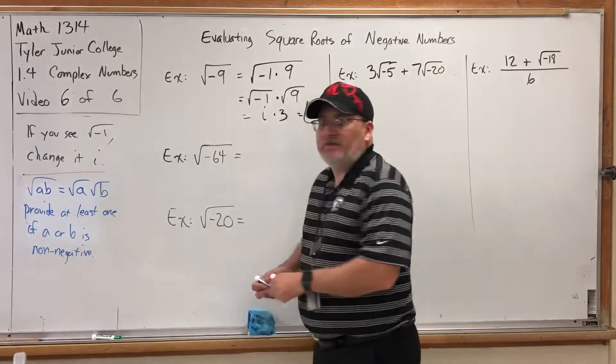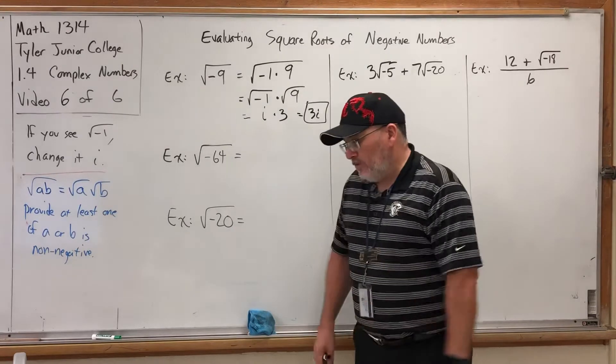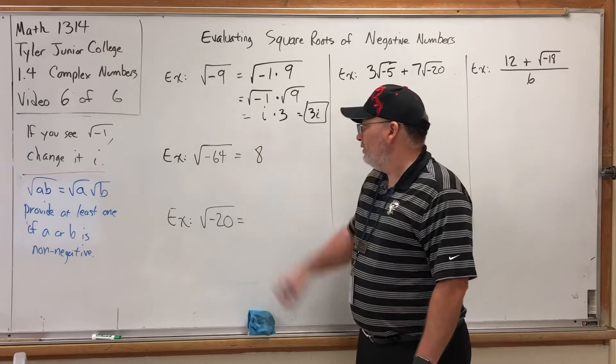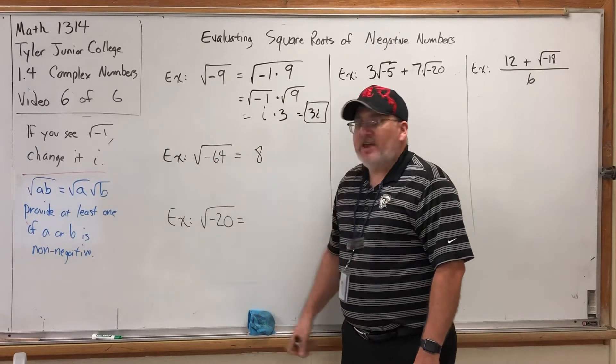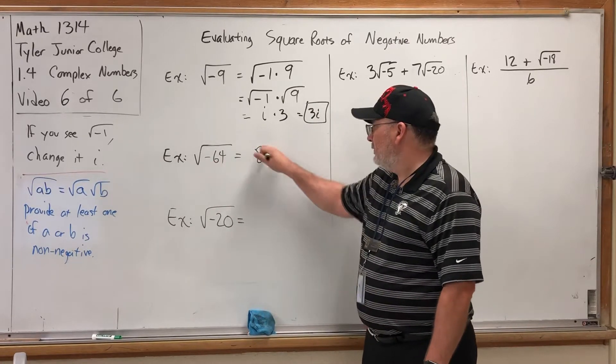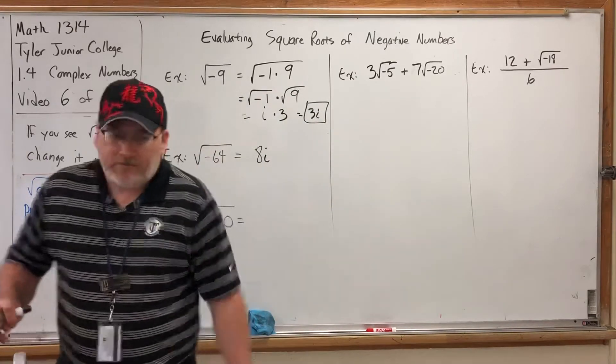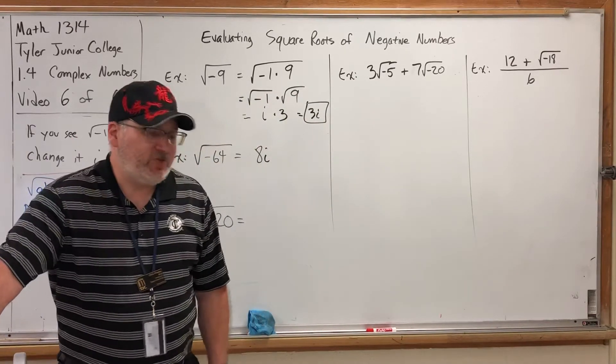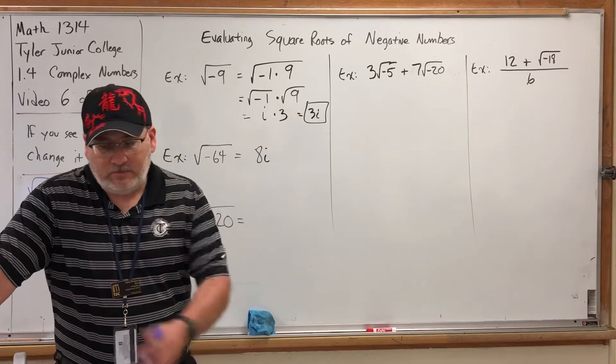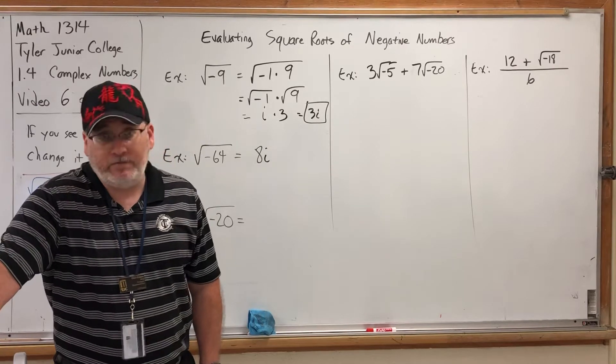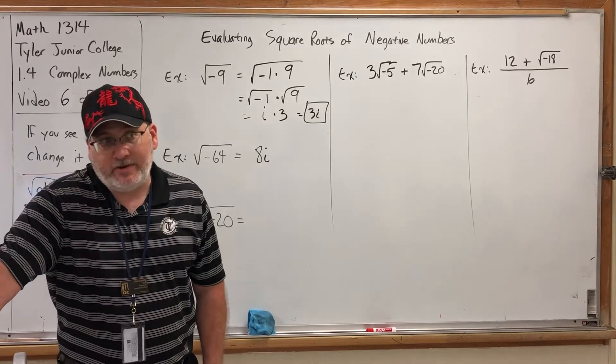So what's the square root of negative 64? Well, what's the square root of positive 64? 8. But when you square root a negative, you get an i. So the square root of negative 64 is 8i. What's the square root of negative 16? 4i. What's the square root of negative 100? 10i.